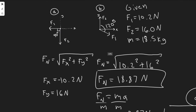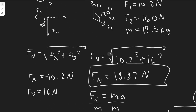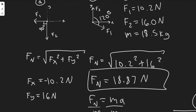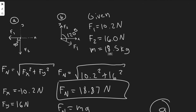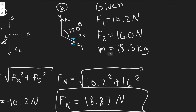Part B is a bit trickier because F1 is not along the x or y axis. When you sum the forces in each direction, you have to convert this force into its components — the x component going horizontally and the y component going vertically.